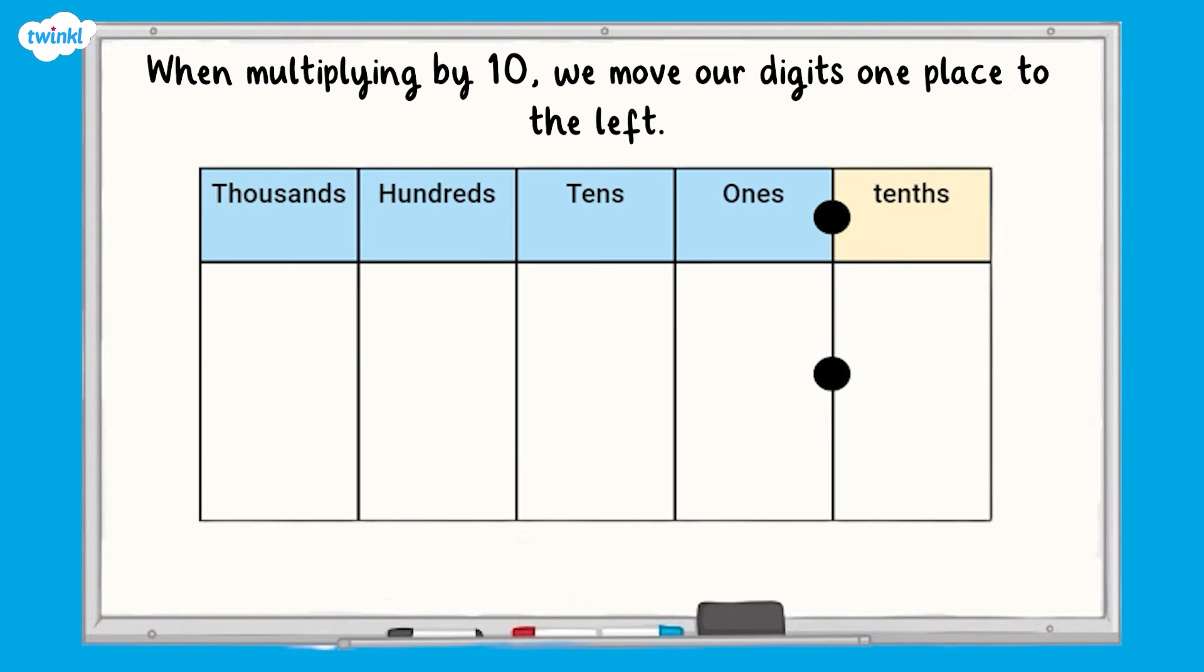This rule does not only apply to integers, which are whole numbers, but we can also use this rule to help us multiply decimal numbers. Here is a place value chart. This place value chart has all of the columns we have already used, but it also has the tenths column.